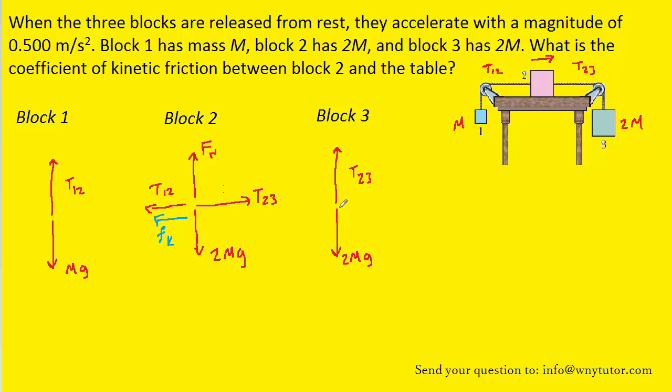Block three has only two forces acting on it: the downward gravitational force of 2mg and the upward tension force of T23.